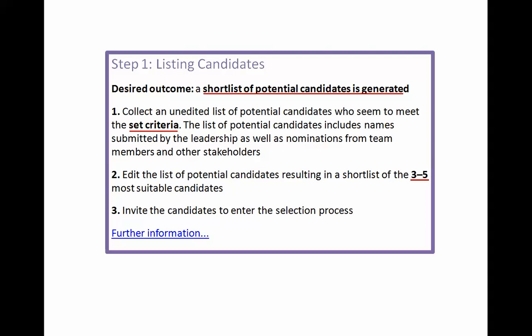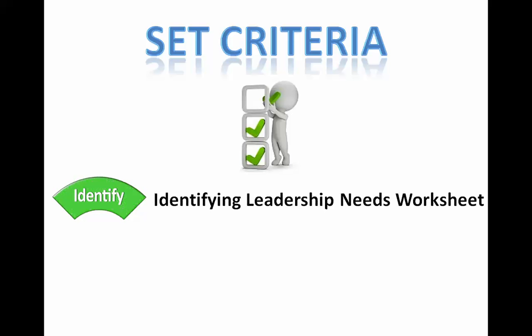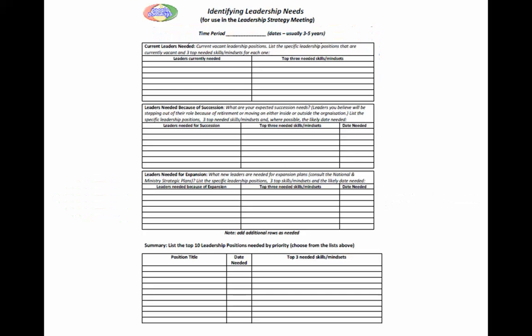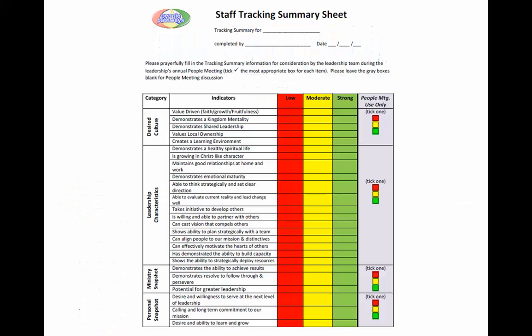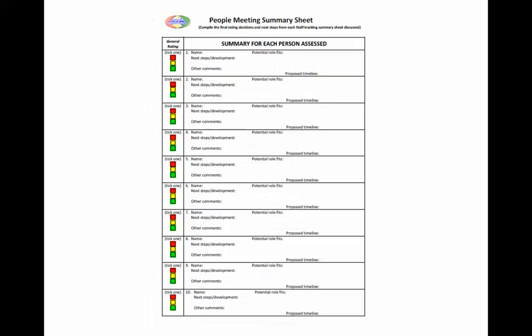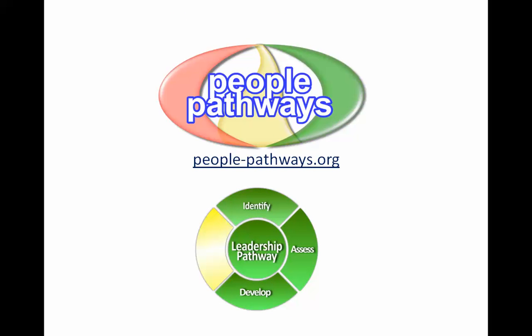To help determine what the criteria are for the specific role and who may meet these criteria, you'll need to refer to tools used in the identify step — the Identifying Leadership Needs Worksheet — and the assess step — the Staff Tracking Summary Sheet and People Meeting Summary Sheet. These tools are located in the People Pathways Toolkit in the leadership pathway.